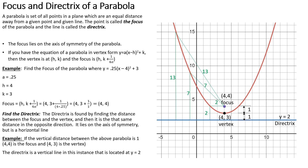More importantly, we want to look at the focus and directrix of the parabola. The basic equation for a parabola is y equals a times (x minus h) squared plus k, where h and k are the vertex coordinates — no different than what we had with circles and ellipses. These are all conic sections.